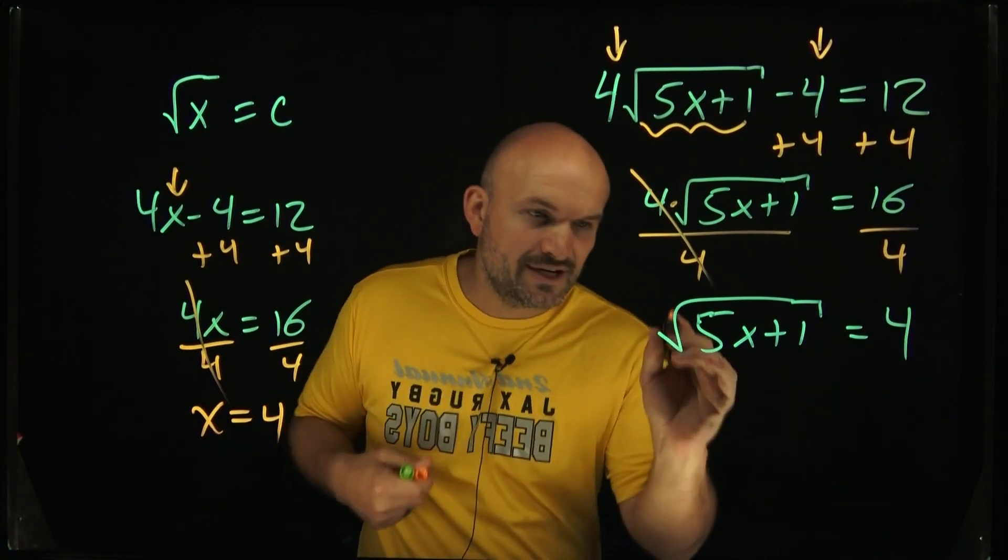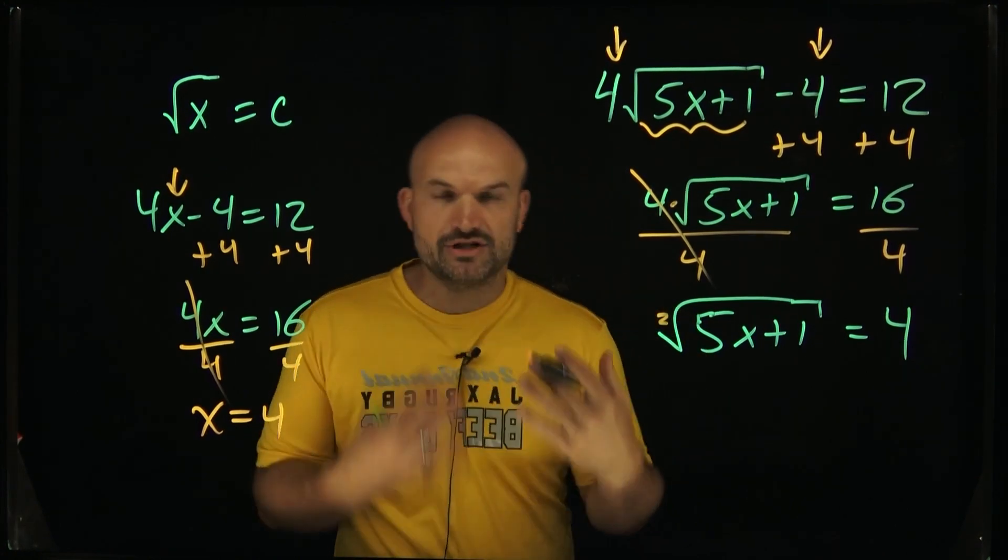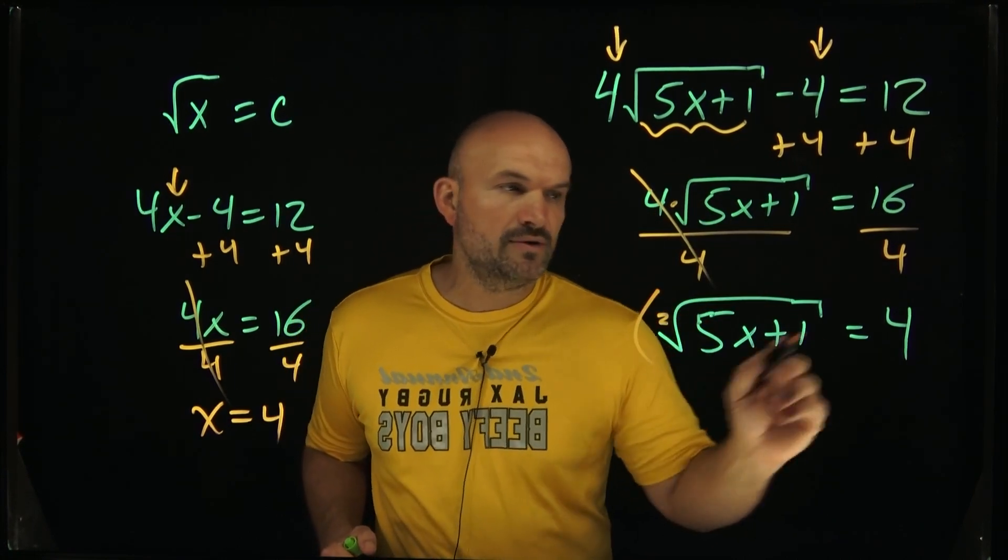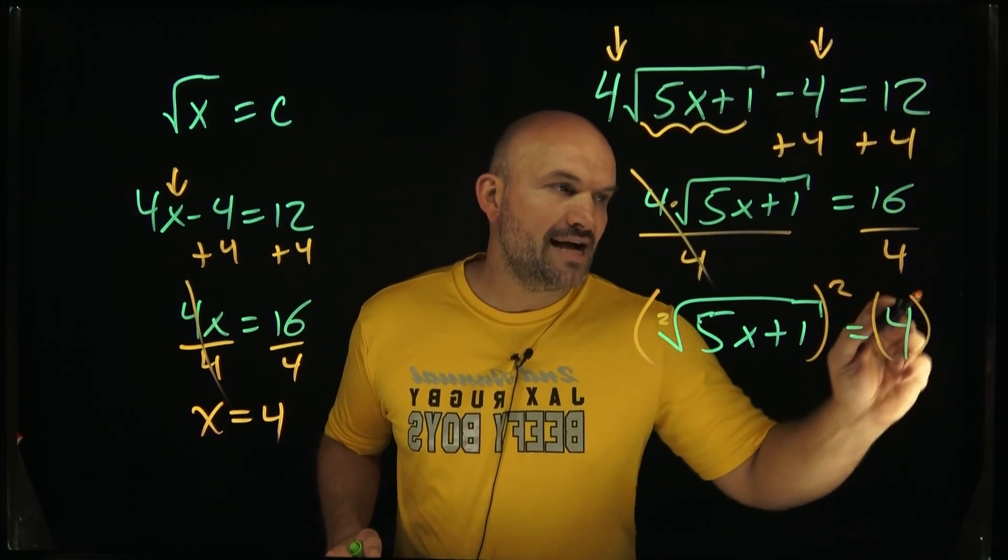Remember, we have an index here, which is 2. So if there's no number there, it's just assumed that it is 2. So if I want to undo taking the square root, all I simply need to do is square both sides.